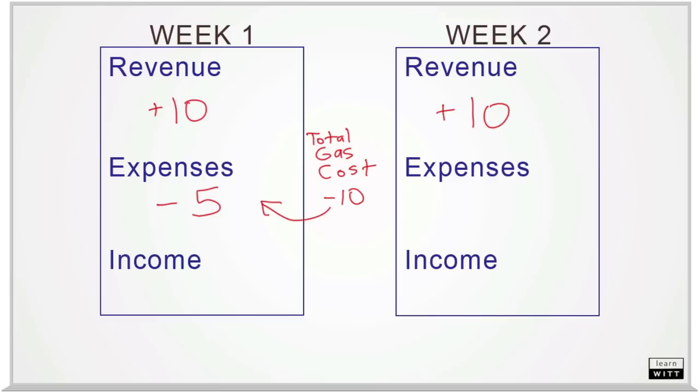Therefore, $5 is shown as an expense in week one, and $5 is shown as an expense in week two. The business earned $5 in each week. This is accrual accounting.